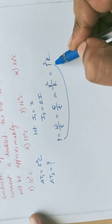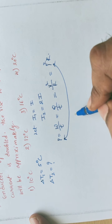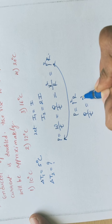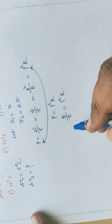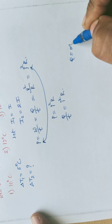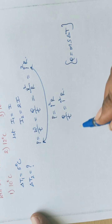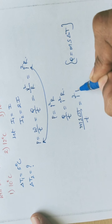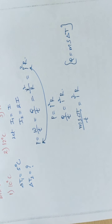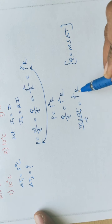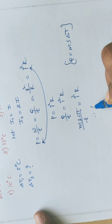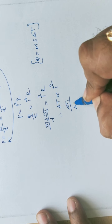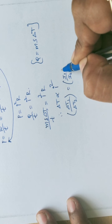Using the formula P equals I squared R, and P equals Q by t, we write ms delta T divided by t equals I squared R. Here m, s, t, and R are all constants. Therefore delta T is proportional to I squared.